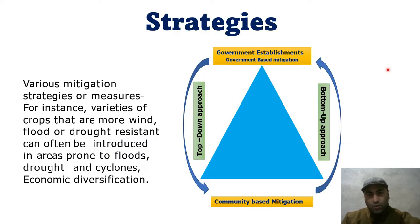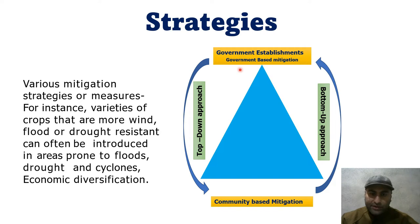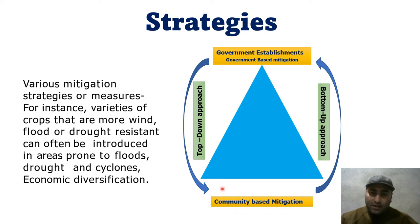There are top-down and bottom-up approaches for disaster mitigation. The top-down approach involves government-established mitigation where funds flow from central government to state, district, and block level, which takes time to reach affected communities. The community-based disaster management approach ensures communities are prepared and can take care of themselves until government relief and response arrives.